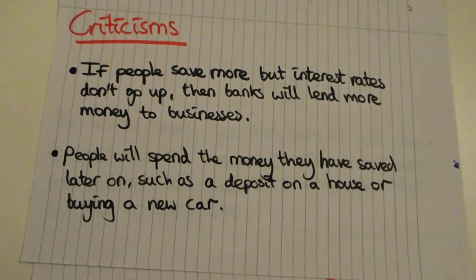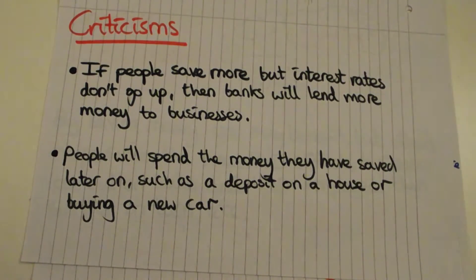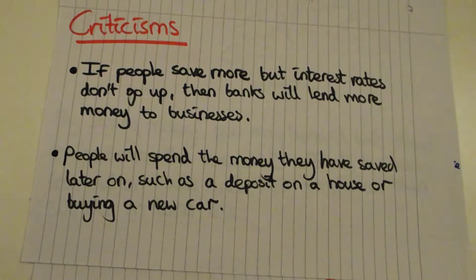So I disagree with that first criticism. The second one is more compelling: people will spend the money they've saved later on — putting a deposit on a house, buying a new car, or paying university tuition fees. So the economy might suffer now, but because some people are saving while others are spending, they sort of cancel each other out. We get a dip in demand now and an expansion later, and because these coincide, nothing catastrophically bad happens.